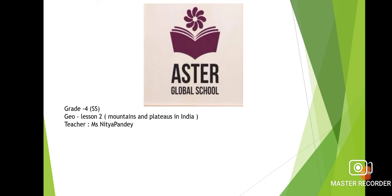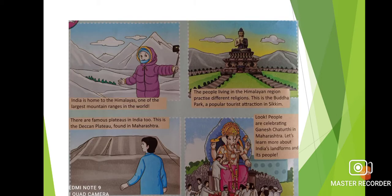So let's see the different landforms in India. India is home to the Himalayas, one of the largest mountain ranges in the world. The people who live in the Himalayan region practice different religions. This is the Buddha Park, a popular tourist attraction in Sikkim.